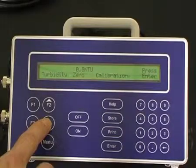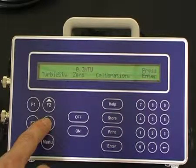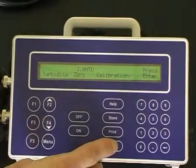For the first point turbidity calibration, which is zero in deionized water, allow the sensor to equilibrate. Once the sensor has equilibrated, press the enter button.